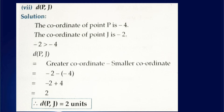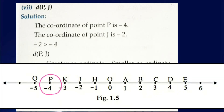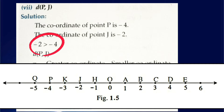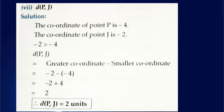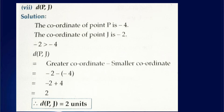The seventh one: distance between P and J. The coordinate of point P is minus 4 and the coordinate of point J is minus 2. Minus 2 is greater than minus 4. Distance between P and J equals greater coordinate minus smaller coordinate: minus 2 minus (minus 4). Minus minus becomes plus, so we get minus 2 plus 4. Minus plus is minus, so 4 minus 2 equals 2, and the sign of the greater number — 4 — is plus. So the answer is 2.